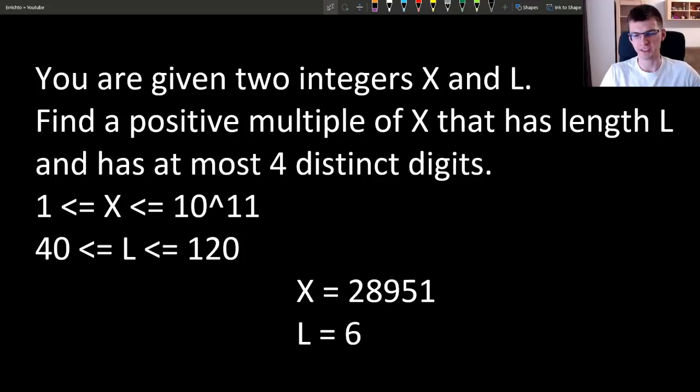Let's see an example. If x is this value and l is 6, then we want to find a number that is x or 2 times x, 3 times x and so on, that will have exactly 6 digits in its decimal representation and there will be at most 4 of them that are distinct.